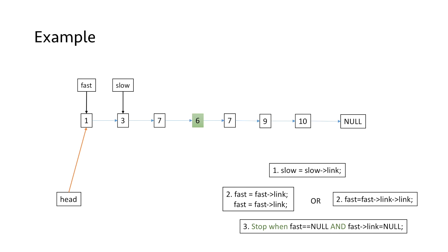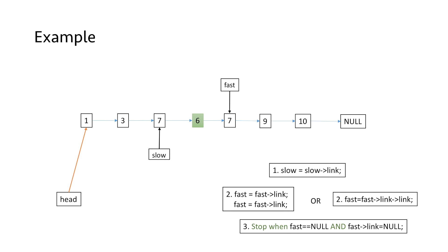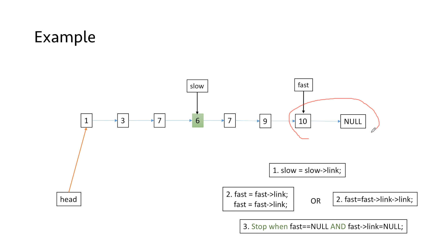Let's actually do this: first we increment the slow pointer by one, then we increment the fast pointer by two, then again increment the slow pointer by one, then the fast pointer by two, again the slow pointer by one, and finally the fast pointer by two. Note that now the link part of the fast pointer has become null — this was our exit condition. Since the number of elements in our example is odd, when the link part of the fast pointer becomes null we stop the loop. Our slow pointer is now pointing to the middle element, so we have access to its data and can display it.